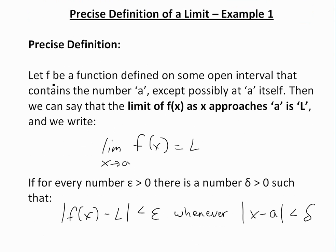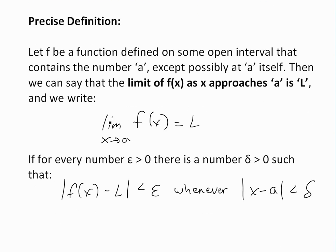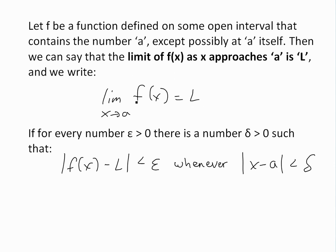The precise definition states: let f be a function defined on some open interval — meaning it doesn't have to be defined on the endpoints — and that contains a number a, except possibly at a, so it doesn't have to be defined there, just the limit has to be there. Then we can say that the limit of f of x as x approaches a is L, and we write it as: limit x approaches a of f of x equals L.